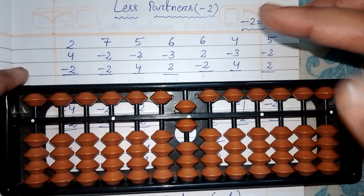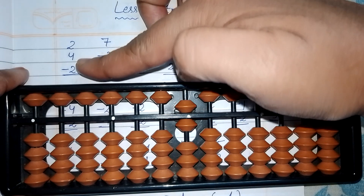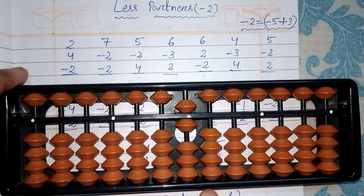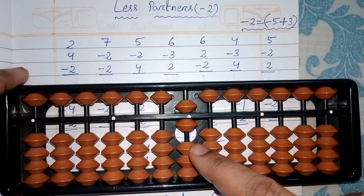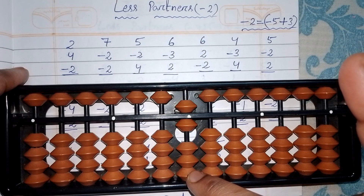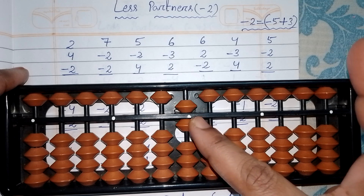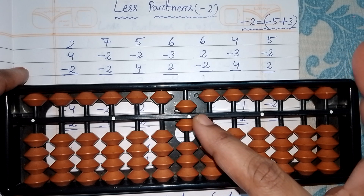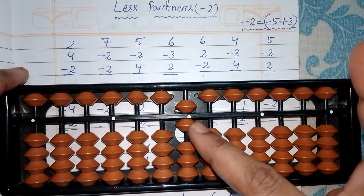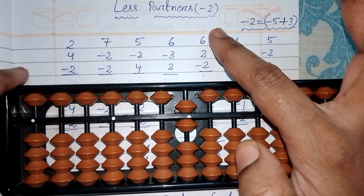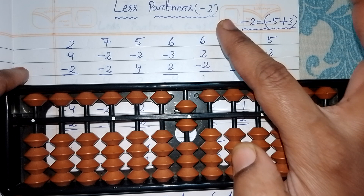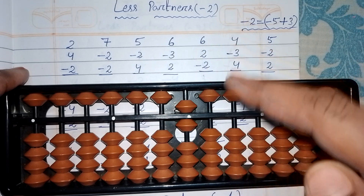Now for less two: look here, we don't have two bits for subtraction. We have three bits for addition but only one bit available here, and not enough for subtraction. In this case we have to take the help of less partner less two.